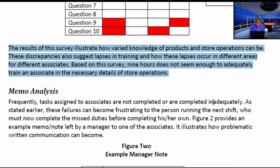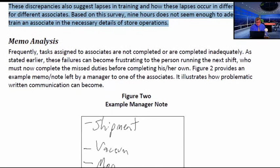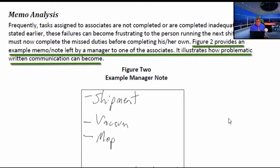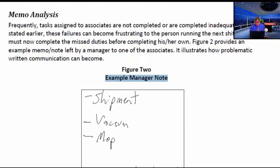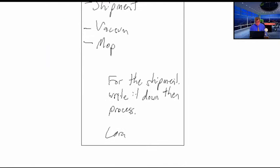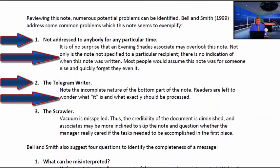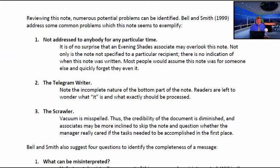Then comes more primary research — memo analysis — with another figure. Notice it is introduced: 'Figure 2 provides an example memo note left by a manager to one of the associates. It illustrates how problematic written communication can become.' It is labeled Figure 2 with a title, and there is the actual illustration. Notice also how indentation is used to provide additional white space, making it easier for the reader to skim and scan and pick up the important points.